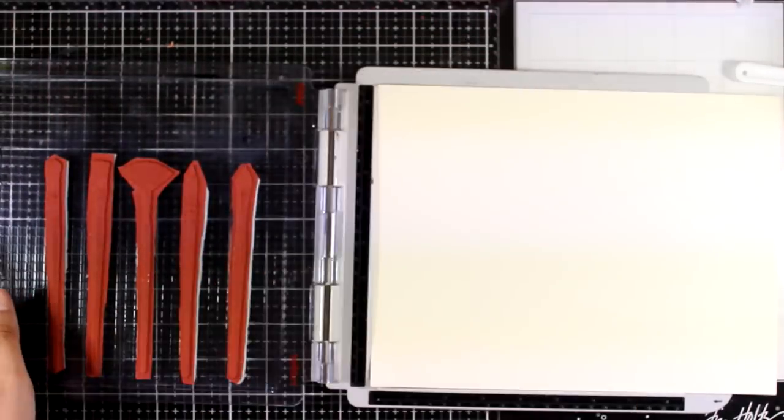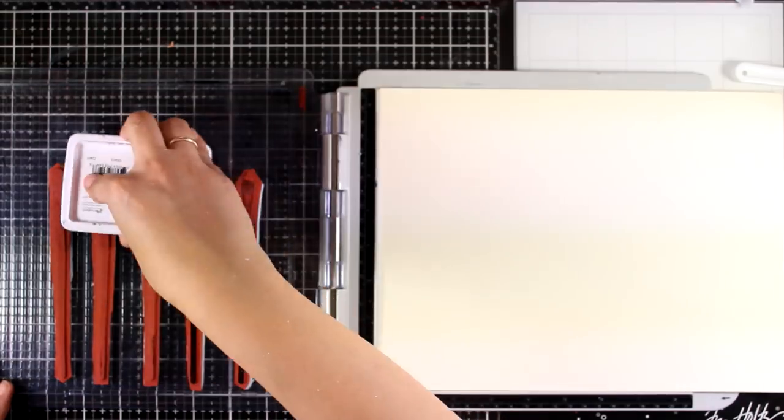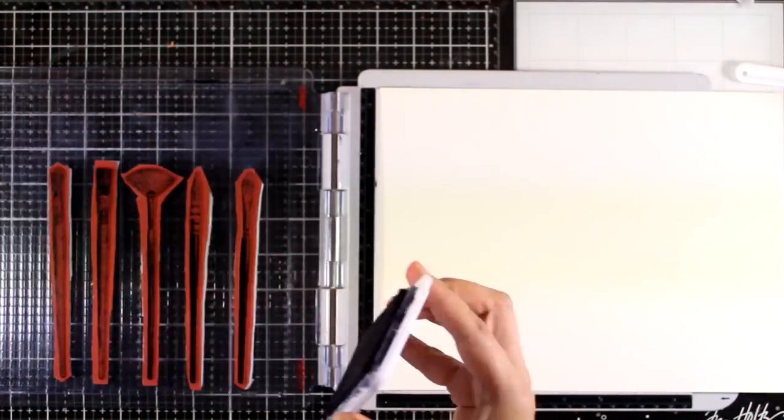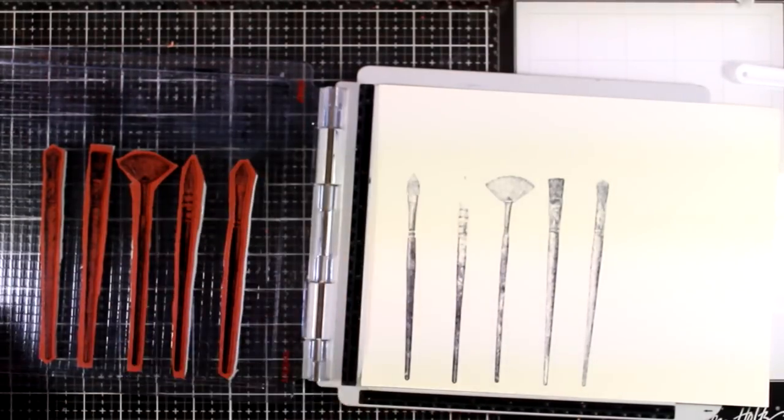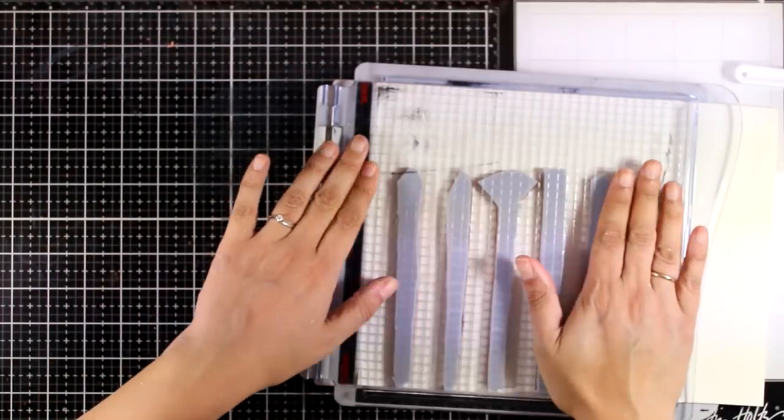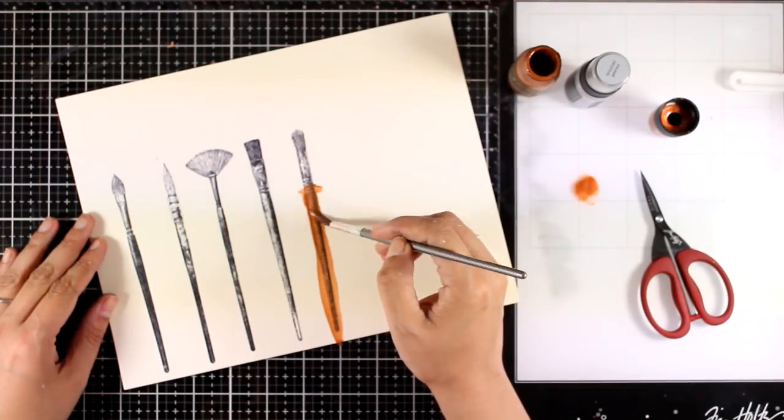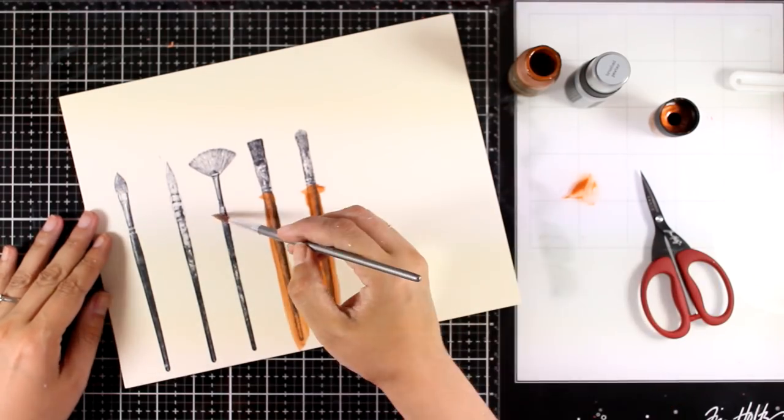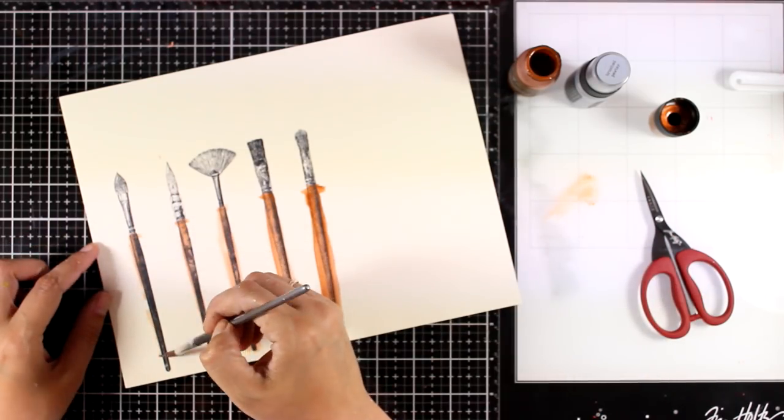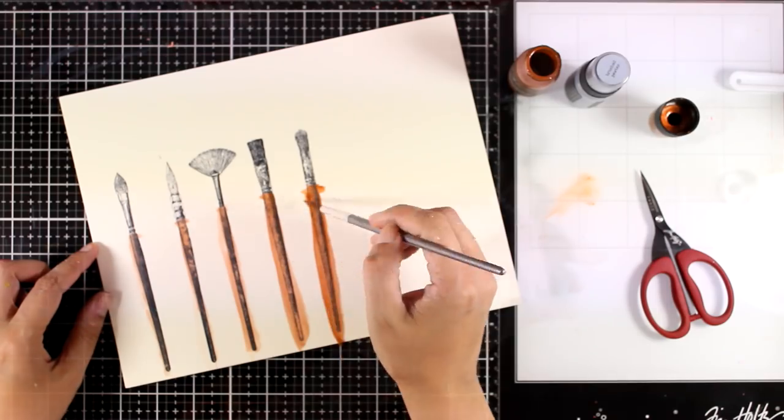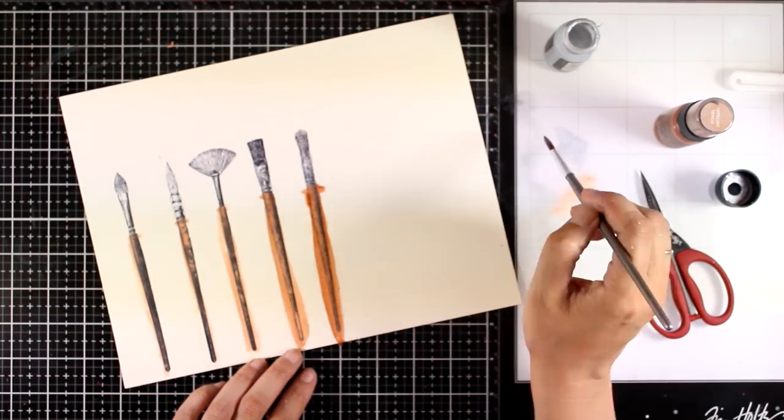This stamp set is called Artist Brushes and it's from Darkroom Door. I will be using five of the brushes included and there are also a bigger brush as well as lots of sentiments. Now I'm going to stamp those with black archival ink and I'm working on a mixed media paper just because it takes paint nicely, but you can use any type of paper that you have. Now I'm going to use some acrylic paint and I'm actually using distress acrylic paint here, but you can use any type of acrylic paint that you have. You can also use markers or watercoloring, whatever you like. I'm just coloring the handles of all the brushes. I will use silver acrylic paint to color the ferrule, which is that metal part of the brush, and then I'm going to use some light brown to color the bristles.